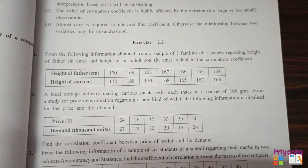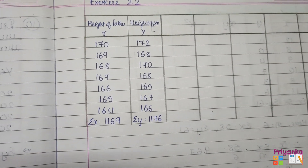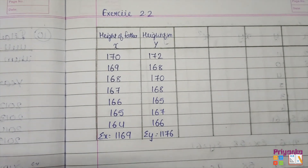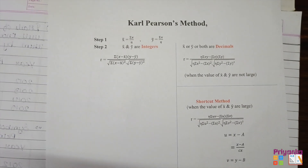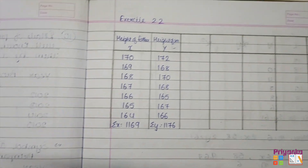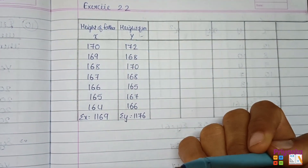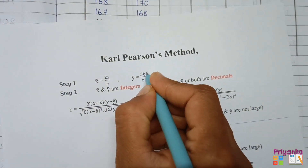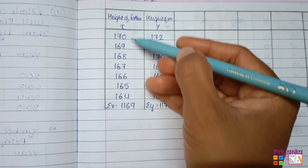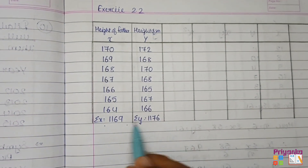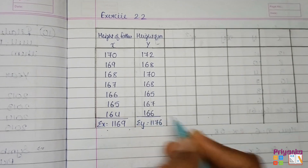We start the Karl Pearson method with this question. Take the information from the question and place it in a table with x and y columns. In Step 1, we find x-bar and y-bar using the formulas: x-bar = Σx/n and y-bar = Σy/n. The totals Σx and Σy are already done in the table.